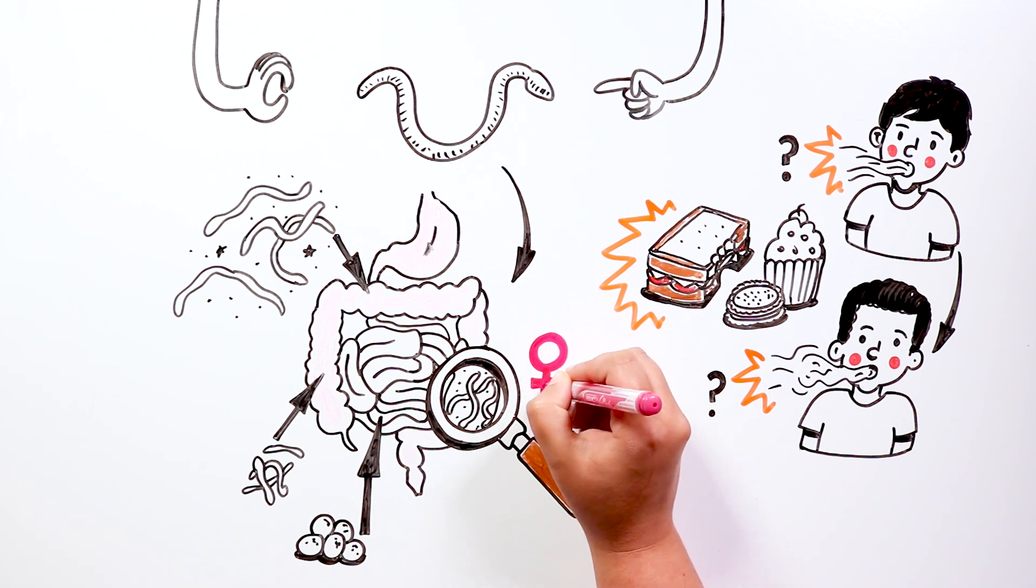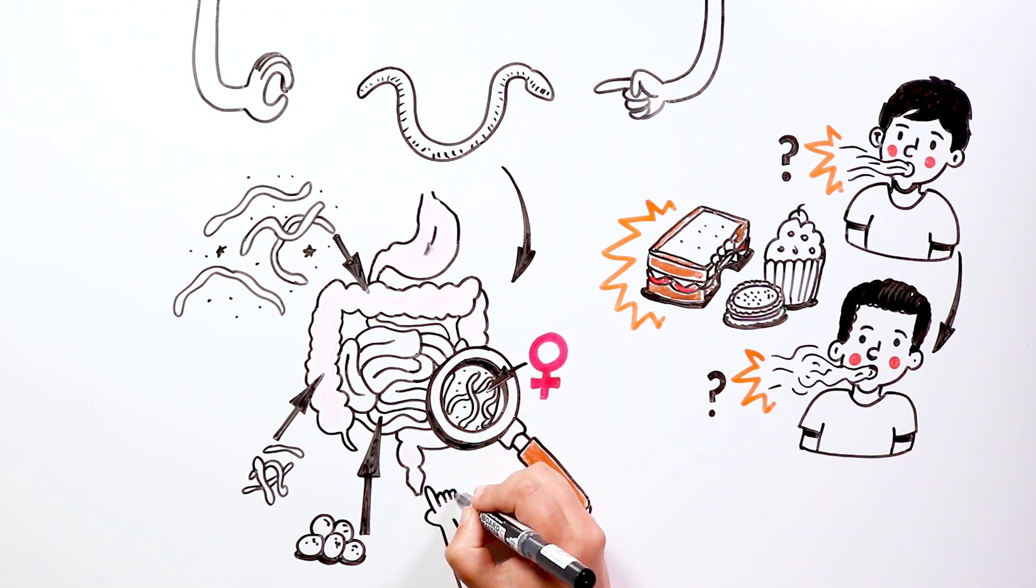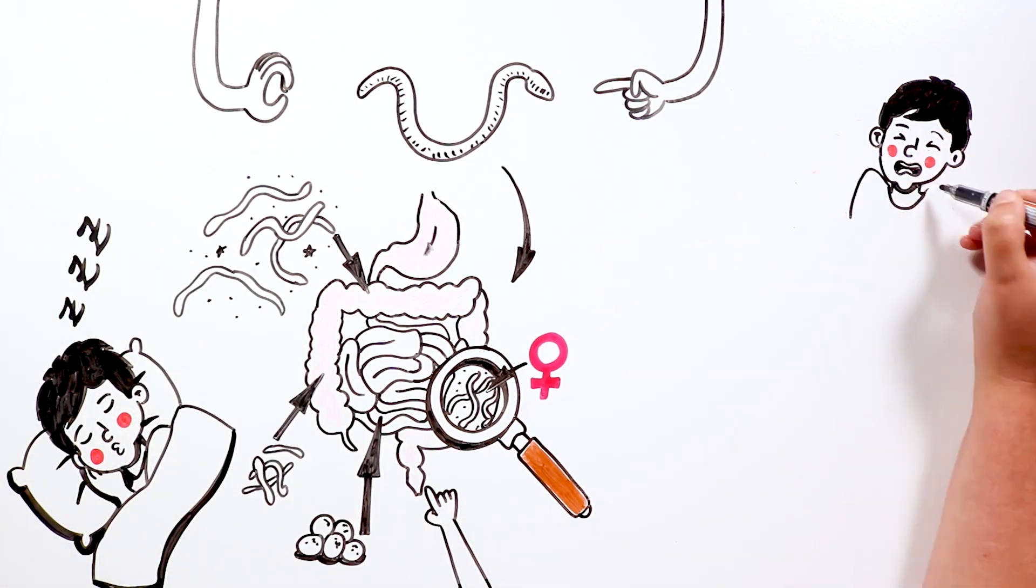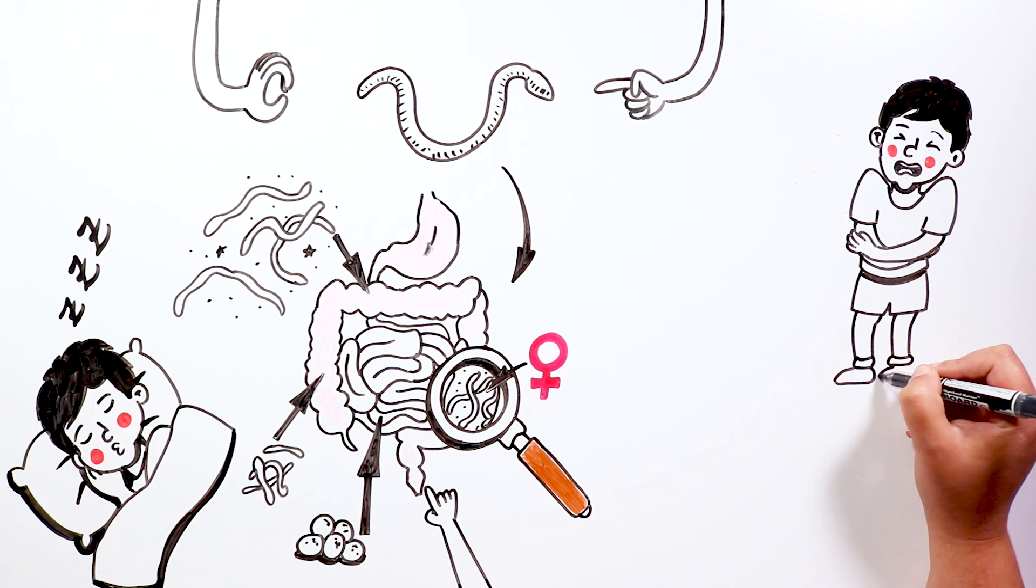The fertilized females go towards the anus, where they lay their eggs. They usually do it at night, while the person sleeps. They stick to the skin, causing irritation and intense itching.